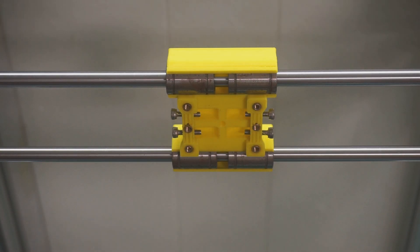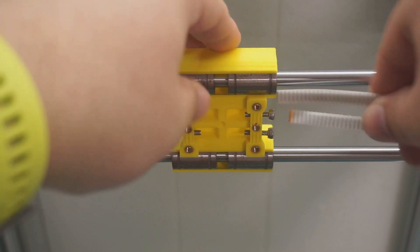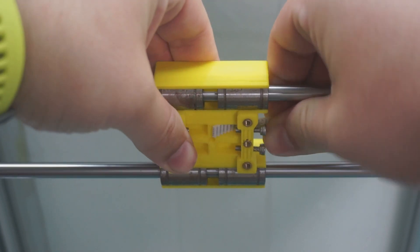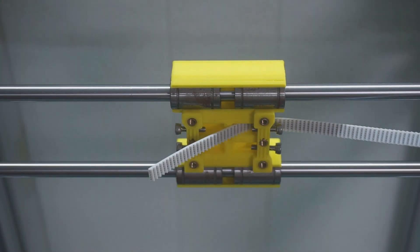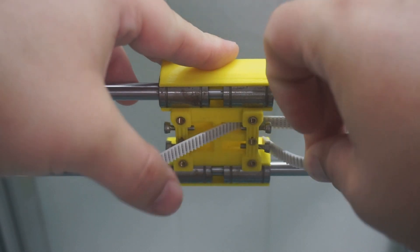To start we'll clamp down one side of the X gantry like so. We insert our belt into the small slot on the side and then we do the same for the other belt.